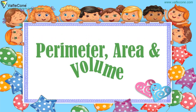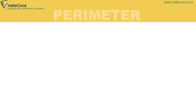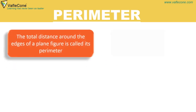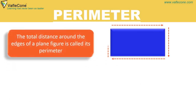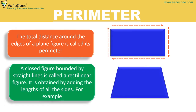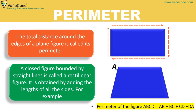Perimeter, area and volume. Perimeter: The total distance around the edges of a plane figure is called its perimeter. A closed figure bounded by straight lines is called a rectilinear figure. It is obtained by adding the lengths of all the sides. For example, the perimeter of figure ABCD is equal to AB plus BC plus CD plus DA.